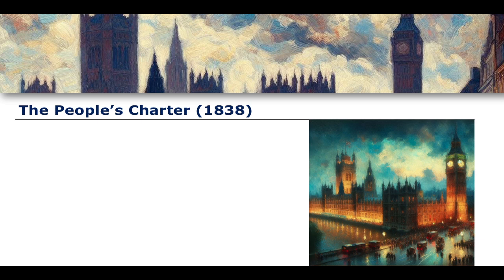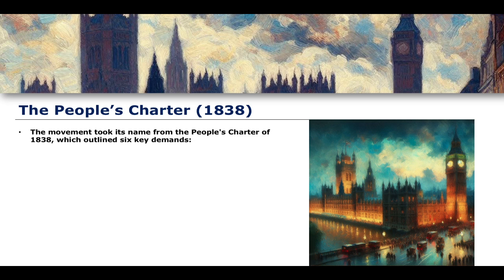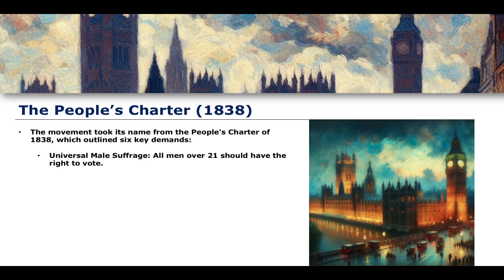The Chartist movement is influenced by and derives its name from the People's Charter of 1838, which outlined six key demands. The first was universal male suffrage — they argued that all men over 21 should have the right to vote, regardless of whether or not they had property or property rights.